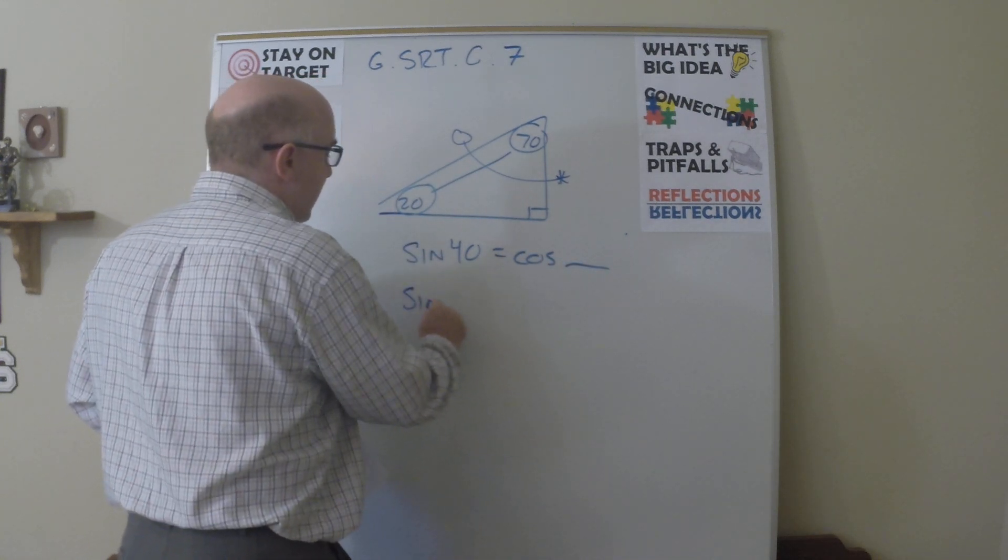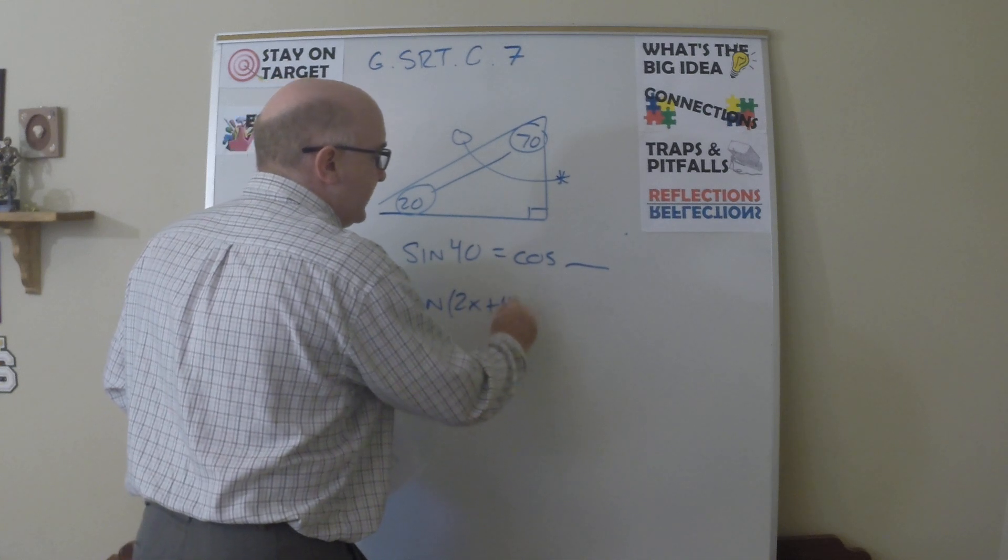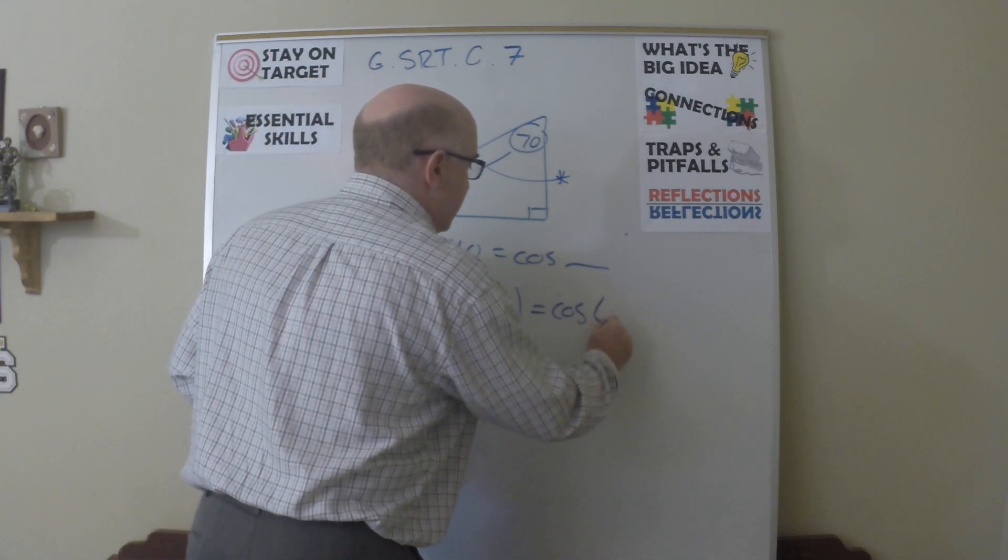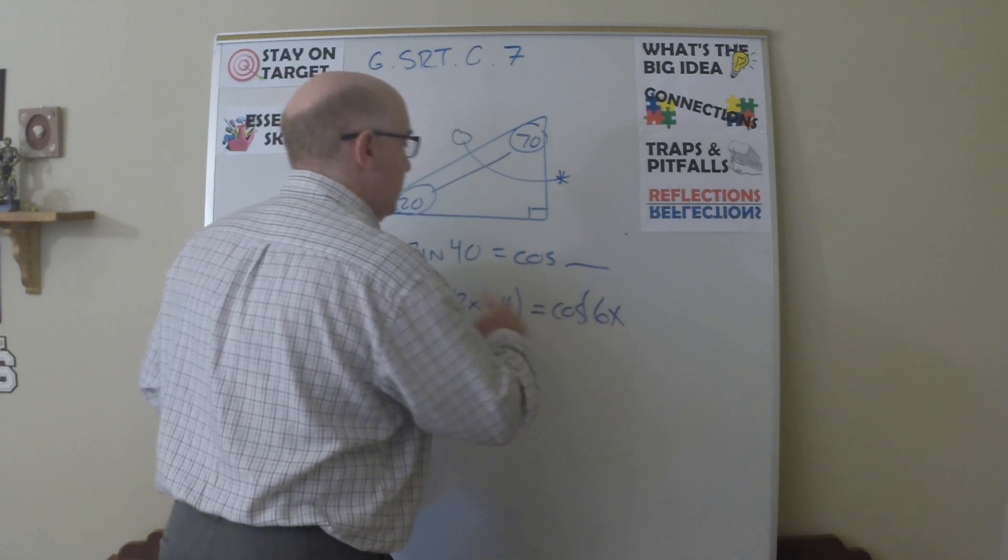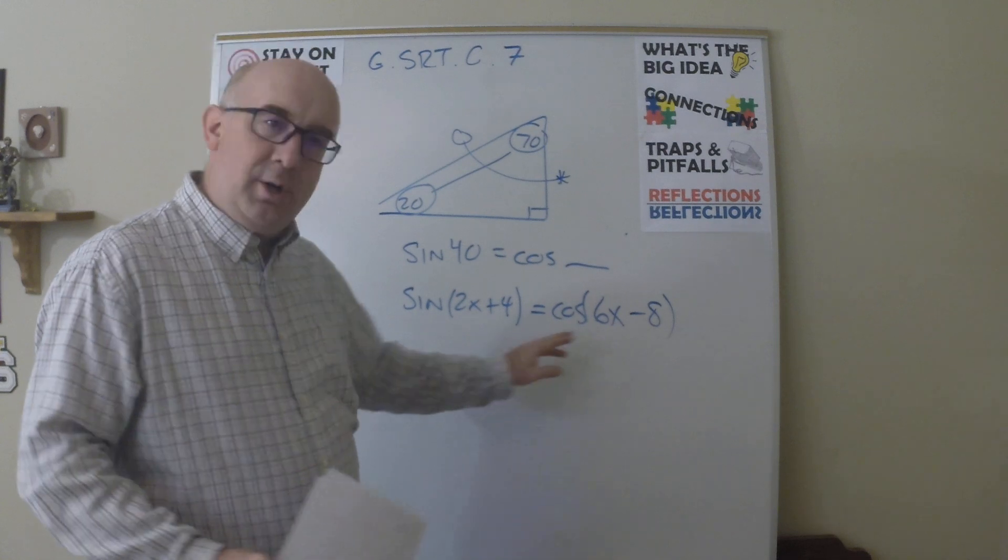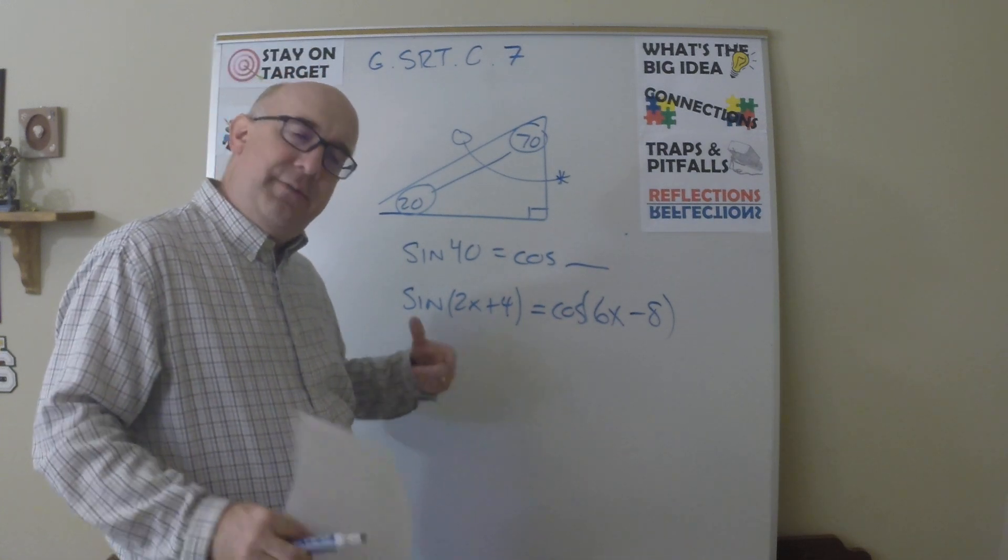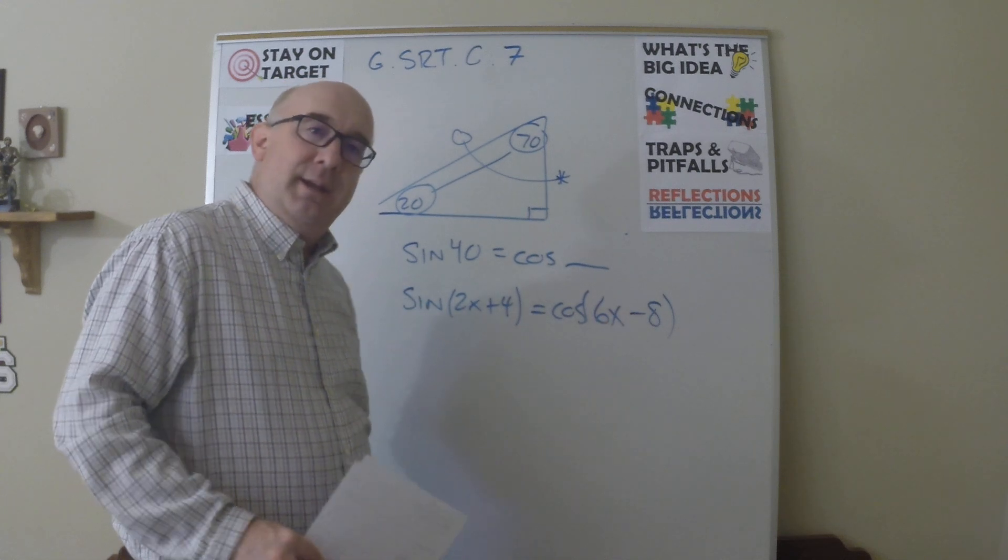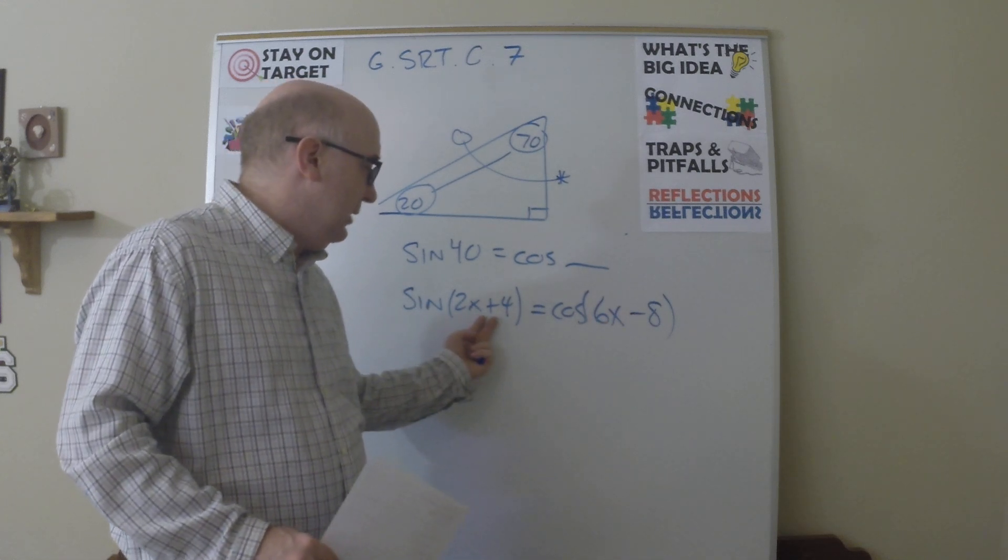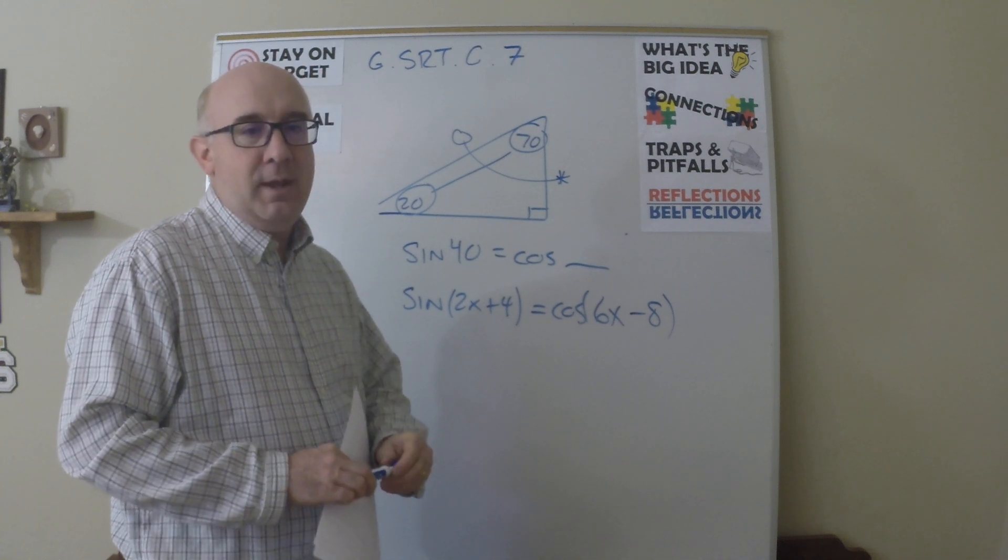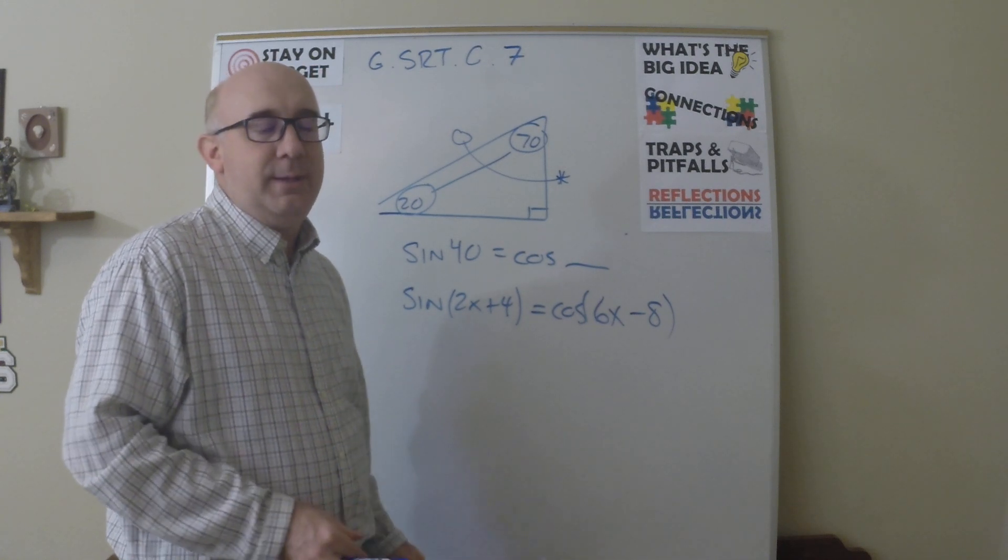If I say the sine of 2x plus 4 equals the cosine of 6x minus 8, they struggle with this. Even if you tell them what to do, they still want to set that equal to that. That's not true. You set the angle added to this angle equals 90. That's about the only thing that they would trip on.